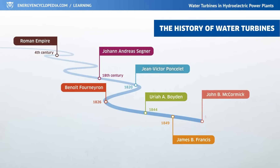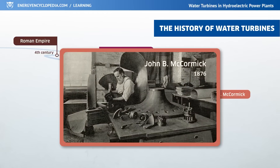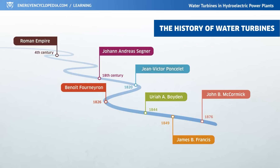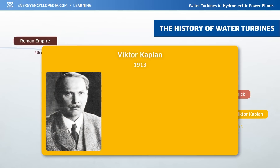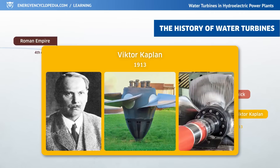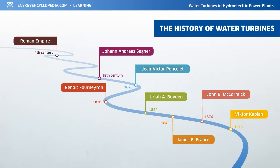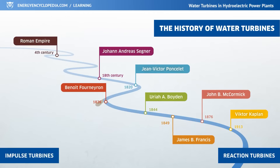In 1876, a quarter century after Francis designed his turbine, John Buchanan McCormick designed the first mixed flow reaction turbine. The last key milestone was in 1913, when Austrian engineer and inventor Victor Kaplan designed a high-speed propeller-type turbine using adjustable blades on both the wicket gate and the runner. All hydro machines perfected until the end of the 19th century were basically reaction turbines; however, the development of impulse turbines was also taking place.